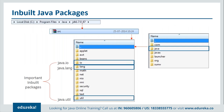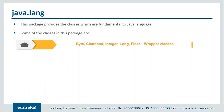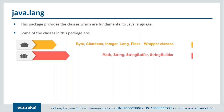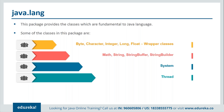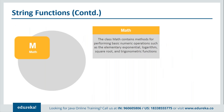Now let's look at inbuilt Java packages. We have java.io, java.lang, and java.util. Starting with java.lang — it provides classes fundamental to Java, such as Byte, Character, Integer, Long, and Float. These are wrapper classes, as indicated by their capital letters — they are not primitive data types. We also have other classes such as Math, String, StringBuffer, StringBuilder, System, Thread, and Exception, some of which we have already seen.